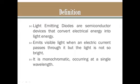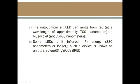Light emitted from the diodes is dim light — it is not so bright. The light that comes out is monochromatic, occurring at a single wavelength. The output of light-emitting diodes ranges from red to blue-violet, covering all the colors of the visible light spectrum. The visible light wavelength ranges from 400 to 700 nanometers; red is approximately 700 nm.